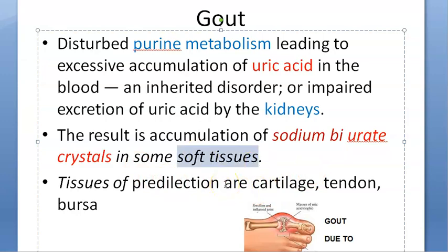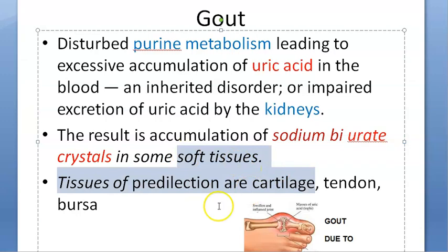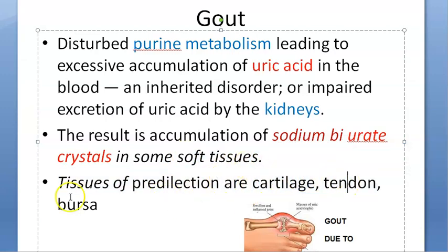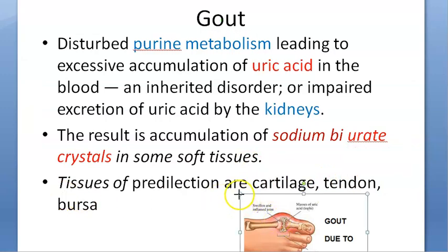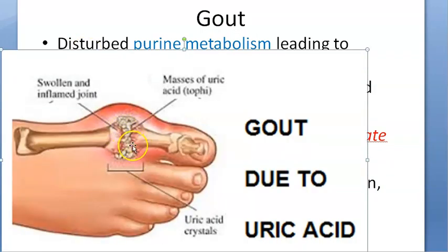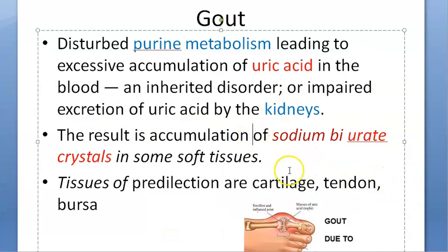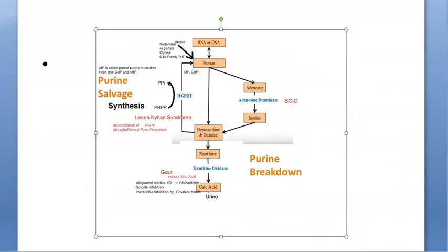Sodium biurate crystals accumulate in the soft tissue — specifically in cartilage, tendon, and bursa. At the joint there is a swollen and inflamed joint, and there is a mass of uric acid called a tophus. So in summary, they deposit in joints, cartilage, tendon, and bursa.